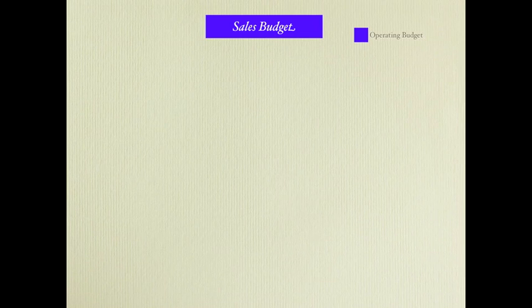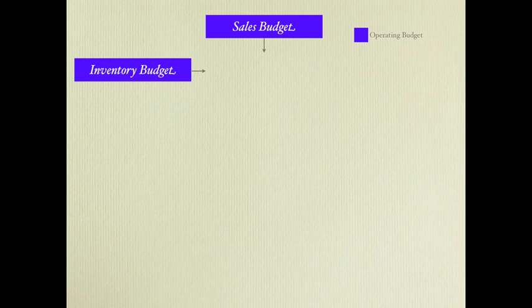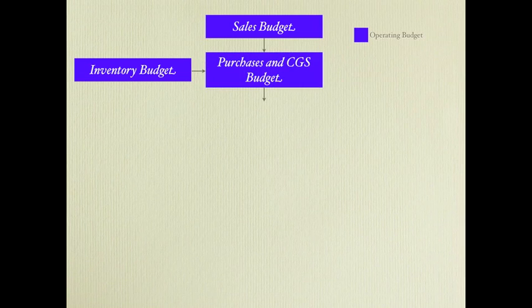Once we determine what we're planning to sell, we need to create our inventory budget and determine how much inventory we plan to have left in our ending inventory. With these numbers we're able to determine: if we're going to sell this much and we want a certain amount left at the end of the period, how much do we need to purchase? So with our sales budget, ending inventory, and cost of goods sold, we can determine how much inventory we need to purchase.